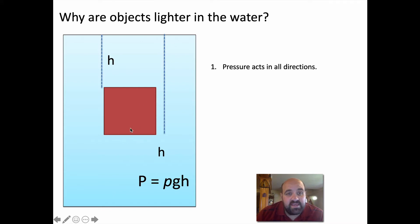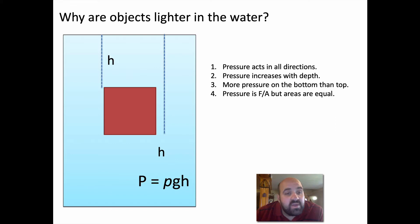You have pressure in every single direction acting on this box. But this surface is further down in the water, and we know that the further down you go, there's more pressure. What that means is there's less pressure pushing down right here than there is pushing up here. There's more pressure pushing up on the box than pushing down. Why? Because the bottom of the box is deeper in the water and there's simply more pressure down there.